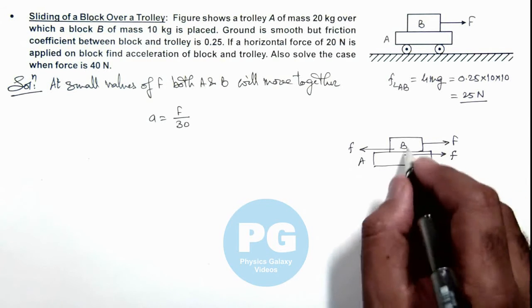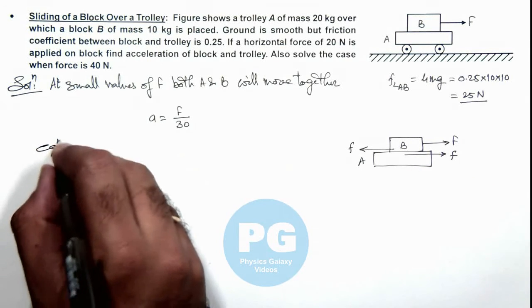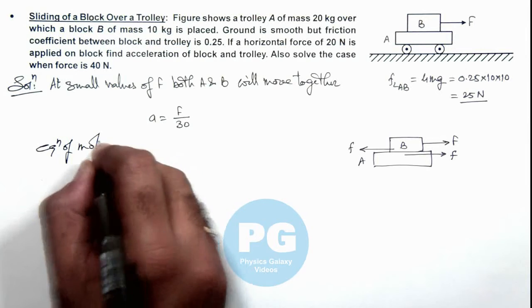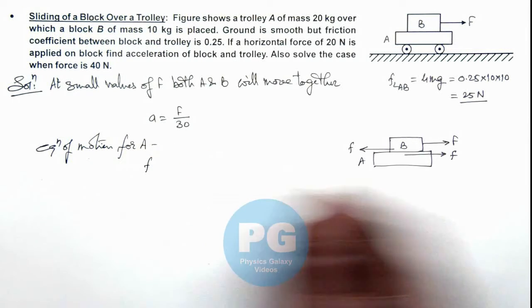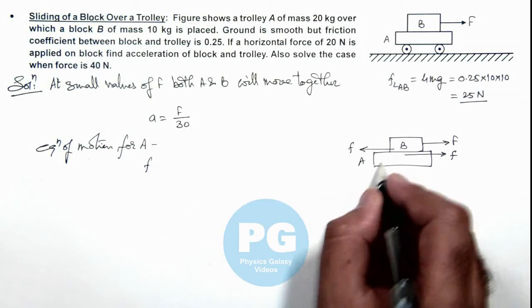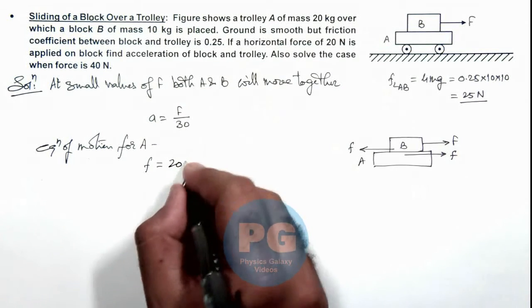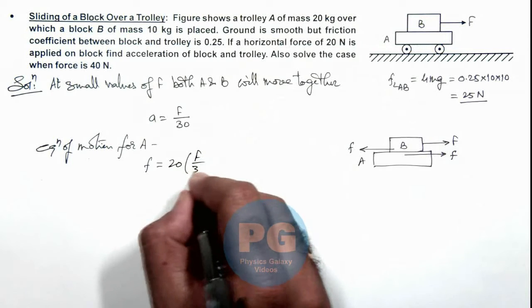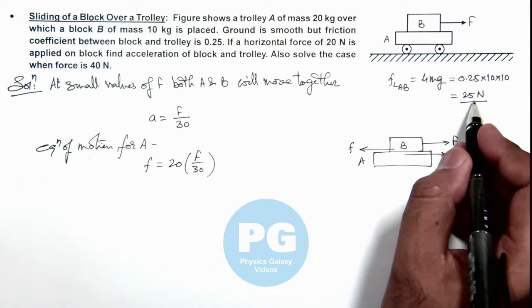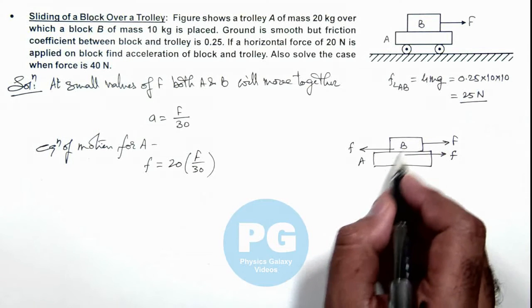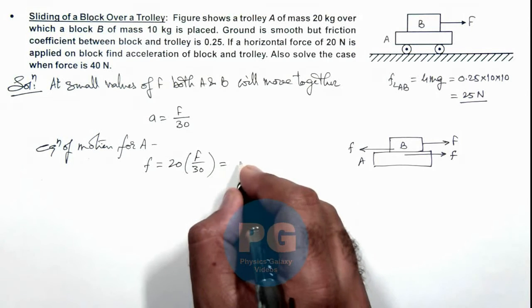So here if we write the equation of motion for trolley A, we can write as the friction acting on it is responsible for motion of A. Mass of trolley A here is 20 kilogram multiplied by its acceleration that is F by 30. When this friction approaches the value 25 newton then block B will start sliding on block A, so we can write this is equal to 25 for sliding between A and B.